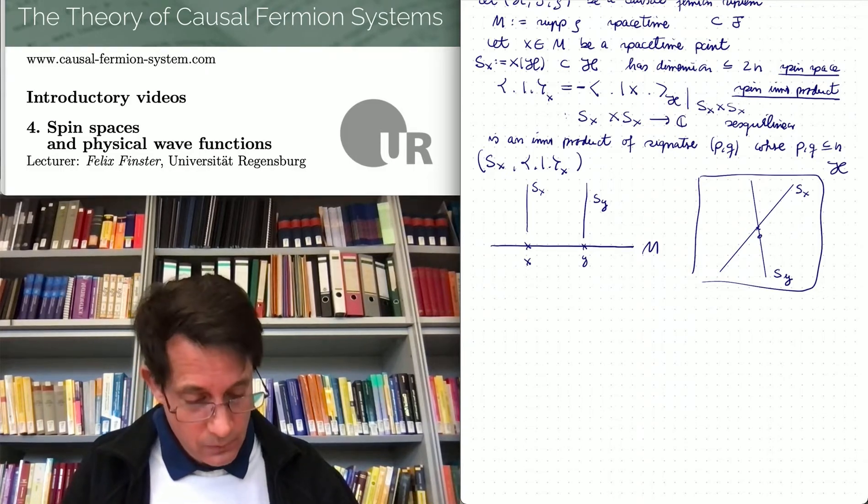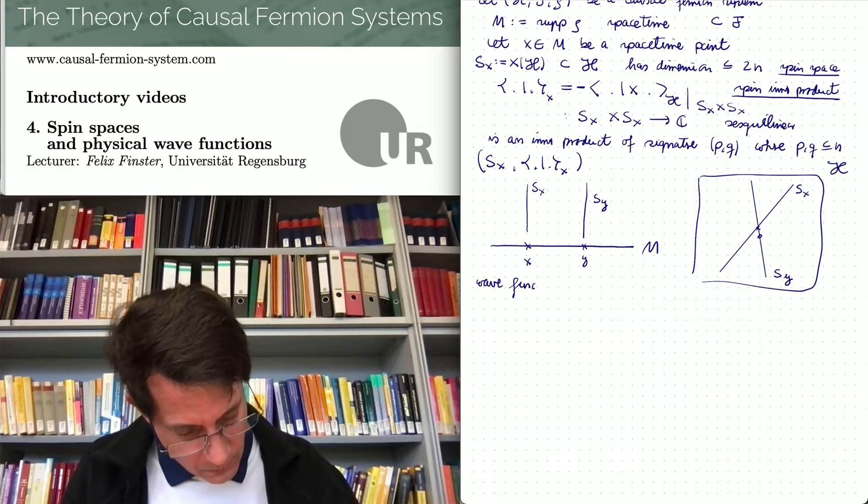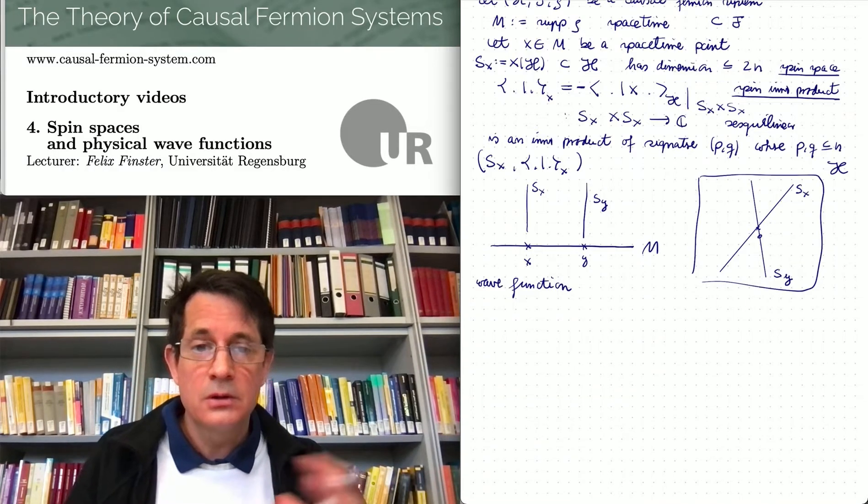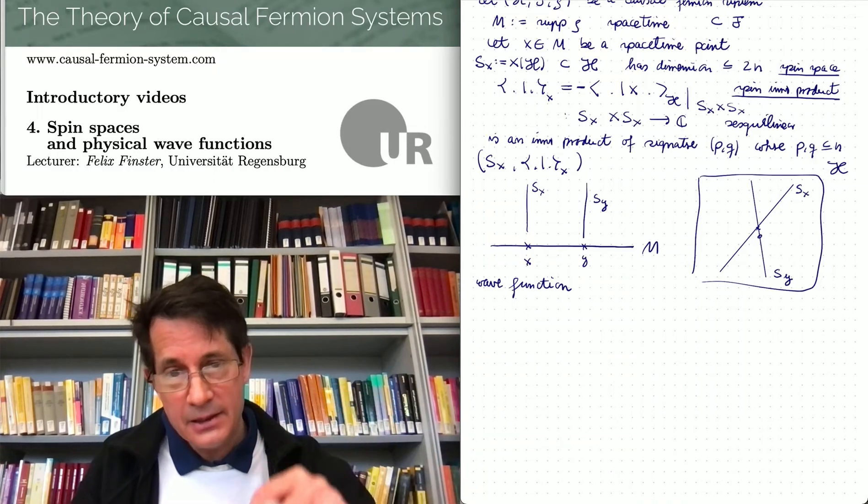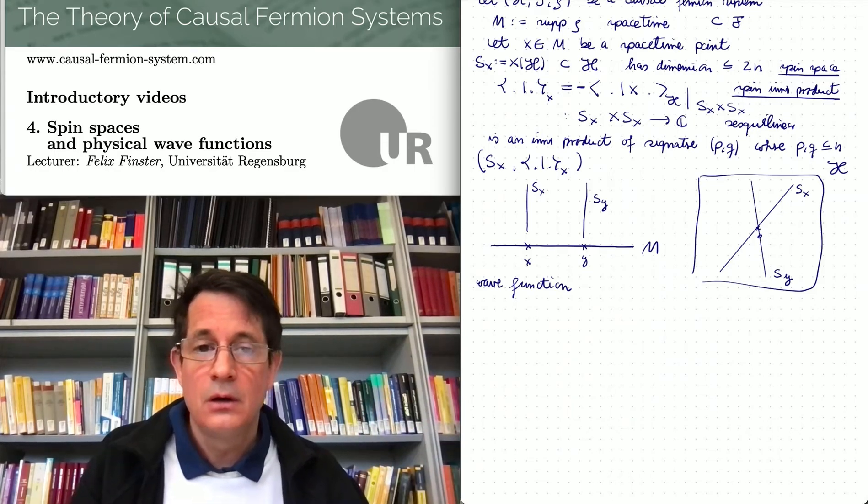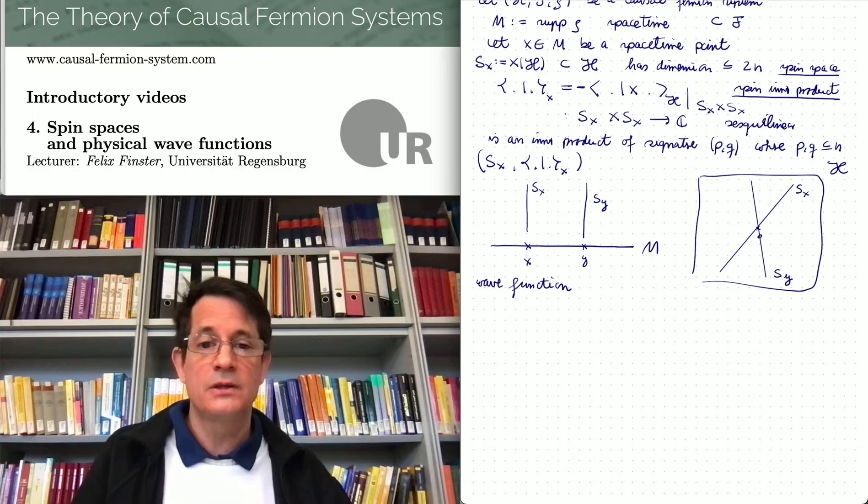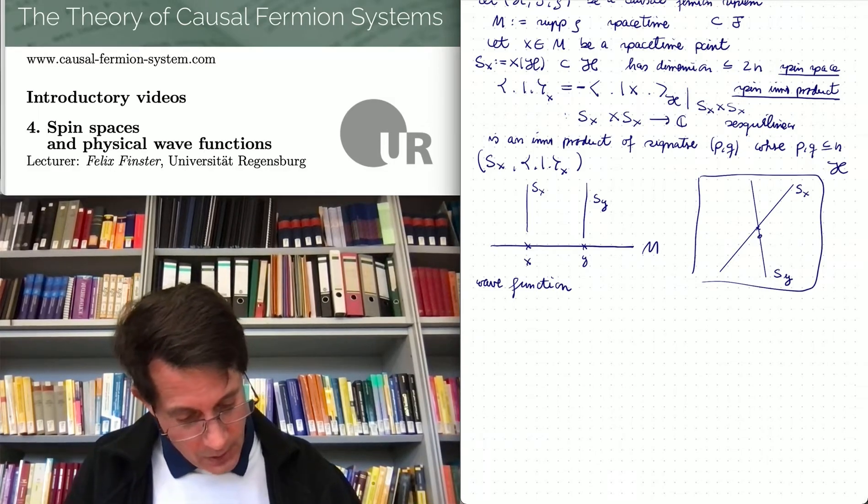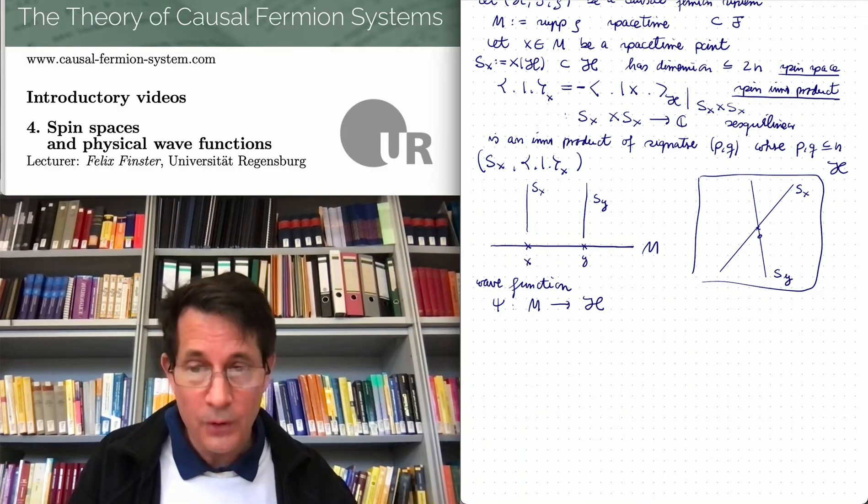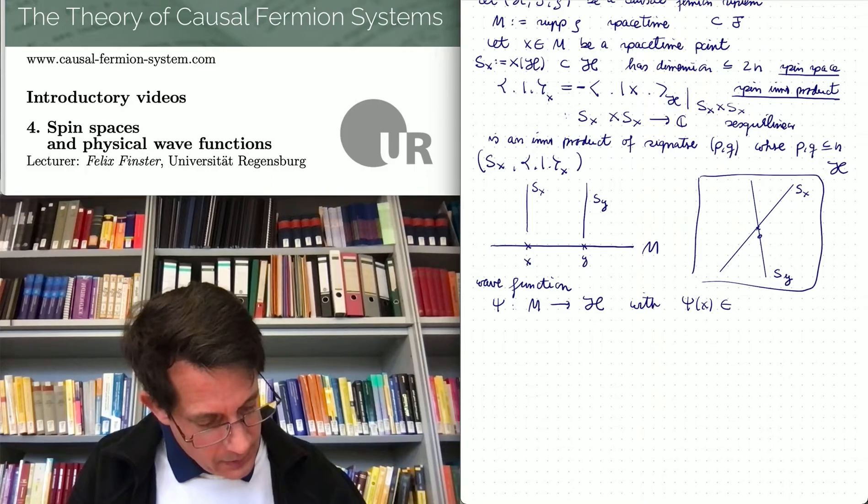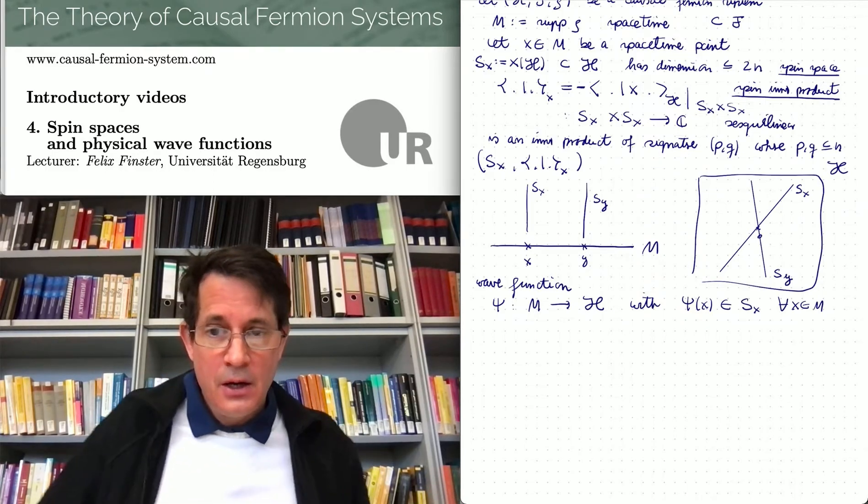This is very useful for constructing wave functions in space time. First, what should be a wave function? If you think of the Dirac wave function, it's a multi-component function in space time. This means to every space time point one associates a vector. Here it's natural that the vector is in the corresponding spin space. In other words, the wave function is something like a section in this bundle. So ψ should be a mapping from M to the Hilbert space with the property that ψ of x is a vector in Sx for all x in M.